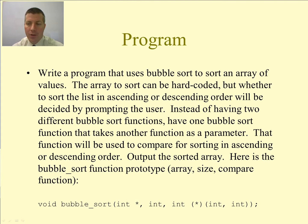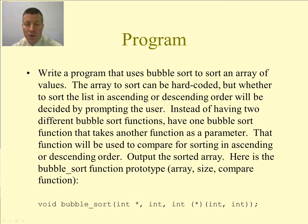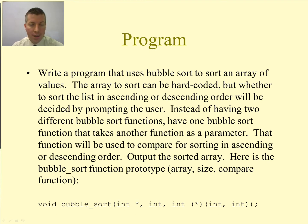Here's the program that we're going to write. We'll write a program that uses bubble sort to sort an array of values. We're going to hard code the array that we're going to sort. However, whether to sort the list in ascending or descending order is going to be decided by the user. So we're going to prompt the user to say would you like to sort your list in ascending or descending order.